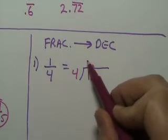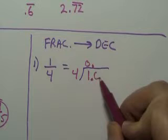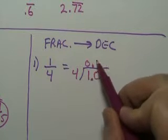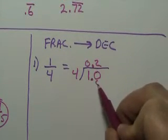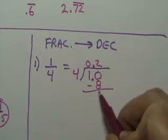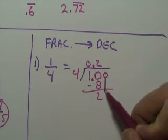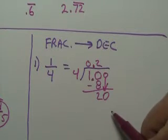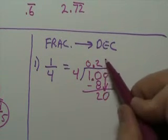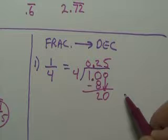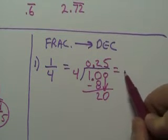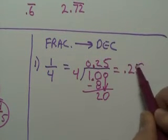4 does not go in a 1, I add a 0. 4 goes in a 10 twice, that's 8, I subtract it, that gives me 2 left over. I add a 0, bring it down, 4 goes in a 20 five times. So the answer is 0.25.